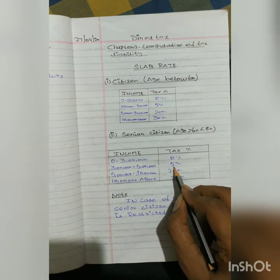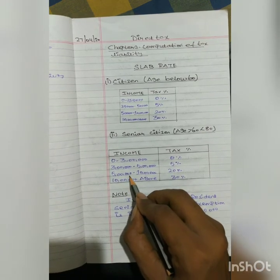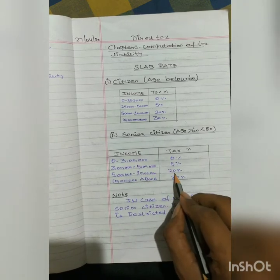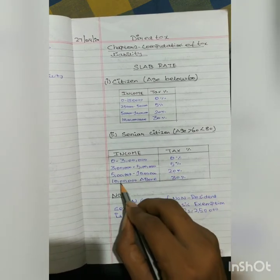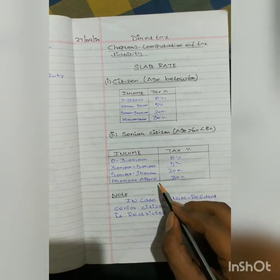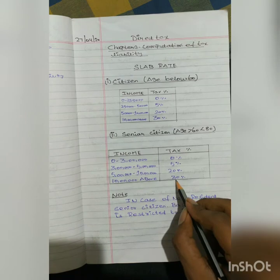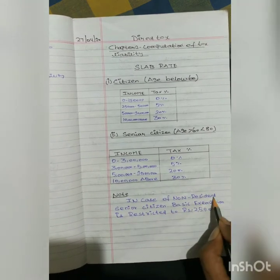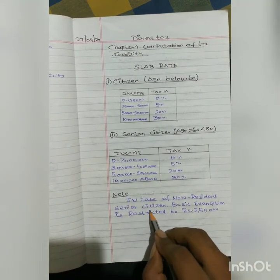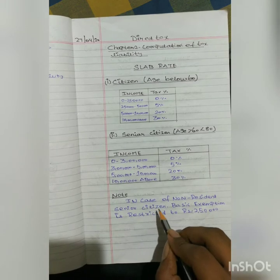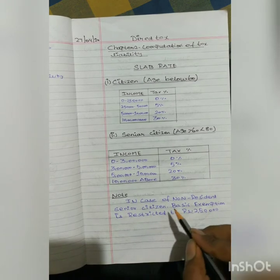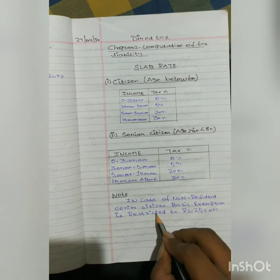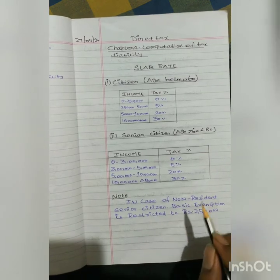The income above 5 lakhs for the senior citizen will be taxed at 20 percent. The income above 10 lakhs will be taxed at 30 percent. Note: in case of a non-resident senior citizen whose age is above 60 but less than 80, the basic exemption limit is restricted to 2.5 lakhs.